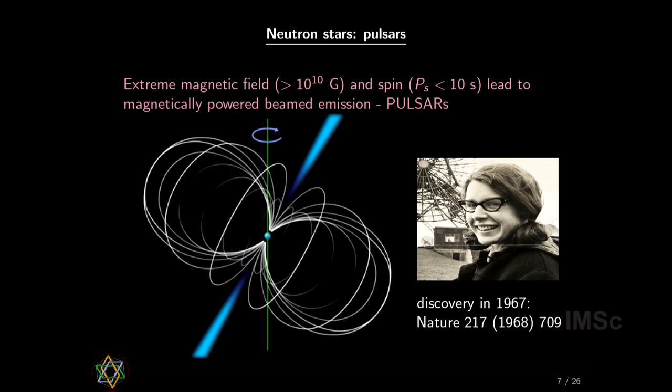The first pulsar was discovered in 1967 by Jocelyn Bell. As Professor Rohini mentioned in the morning about Vera Rubin not getting a Nobel Prize — here also, unfortunately, Jocelyn Bell's supervisor got the Nobel Prize, but Jocelyn did not. But that is the loss of the Nobel Prize committee, not Jocelyn's.